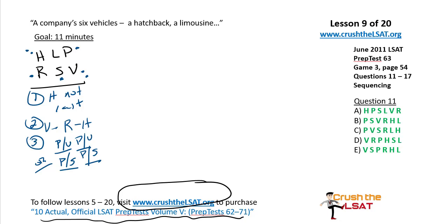Rule four: S earlier in the week than P, or earlier in the week than V, but not both. We've seen something very similar in an earlier game. So we write S < P or S < V, but not both — meaning we have either an S–P situation or a P–S situation. It makes a lot of sense to create two diagrams, two broad scenarios based on this rule.